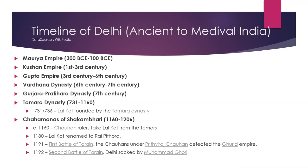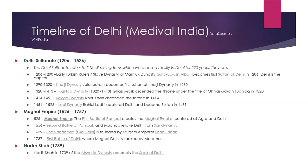The timeline of Delhi from ancient to medieval India: the Maurya Empire (300–100 BCE), the Kushan Empire (1st–3rd century), the Gupta Empire (3rd–6th century), the Vardhana or Pushyabhuti dynasty (6th–7th century), the Gurjara-Pratihara dynasty (7th century onward), and the Tomar dynasty (731–1160), during which Lalkot was founded. Then the Chahamanas of Shakambari (1160–1206): in 1160 Chauhan rulers took Lalkot from the Tomars; in 1180 Lalkot was renamed Rai Pithora. In 1191, the First Battle of Tarain saw the Chauhans under Prithviraj Chauhan defeat the Ghurid Empire. In 1192, the Second Battle of Tarain saw Delhi sacked by Muhammad Ghori, leading to the Delhi Sultanate (1206–1526).